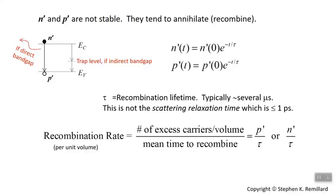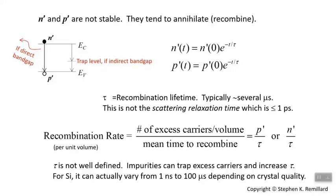Now about this τ, it's a very unreliable number, really not well defined because of the quality of the crystal, impurities, those traps are a consequence of either defects or impurities. And they simply make τ take a long time because an electron can drop into a trap level and stay there for a while. For silicon, τ can vary from one nanosecond to 100 microseconds.